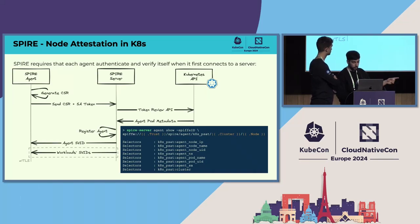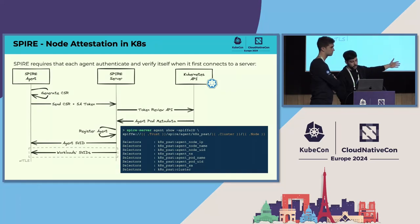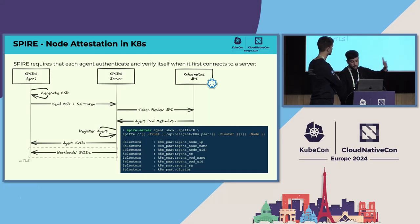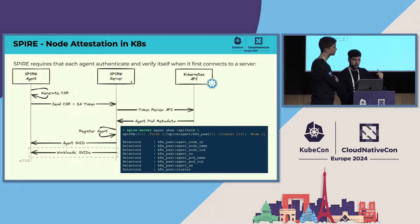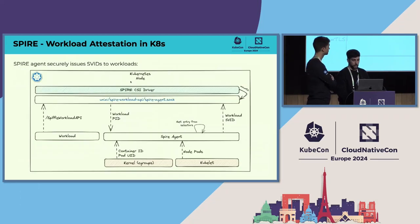The server generates an SVID for the agent, whose format is based on the node attestation plugin — in this case, Kubernetes projected service account. The selectors are retrieved from the token review API and used to identify the agent in the database. Once the agent is registered, it generates an SVID that it uses to establish MTLS communication with the server, and then retrieves and caches all SVIDs for workloads running on that node.